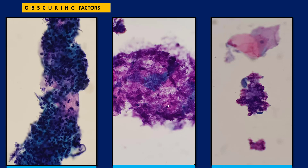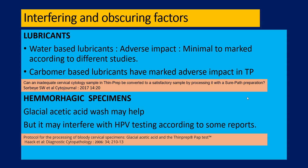Here are some pictures of obscuring factors. These are inflammatory cells obscuring the squamous cells. This is some amount of lubricant which has come on the smear. There is possibly a bit of lubricant and possibly some red blood cells here. Most of the time we use ThinPrep and most often we do not find too many cases with RBCs obscuring the smear.